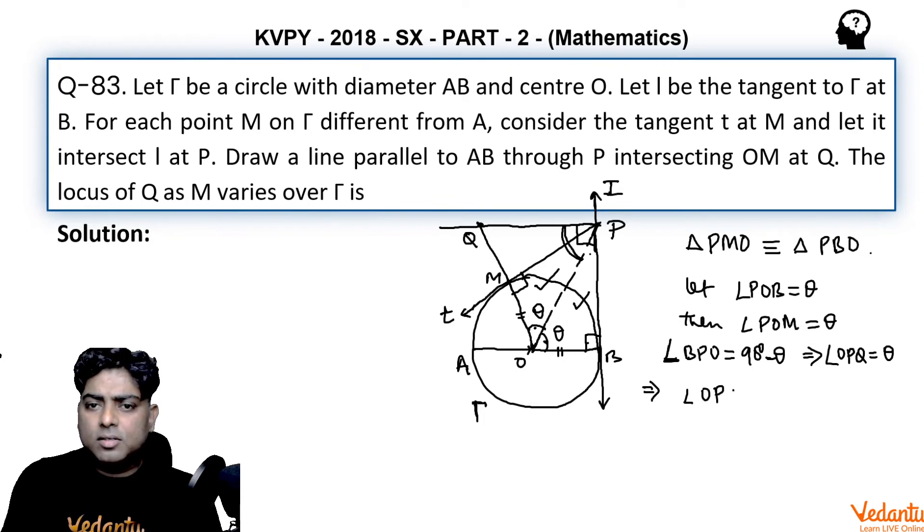So angle OPQ is again θ. Finally, angle OPQ equals θ equals angle POQ. In triangle OPQ, as these two angles are equal, the triangle is isosceles.